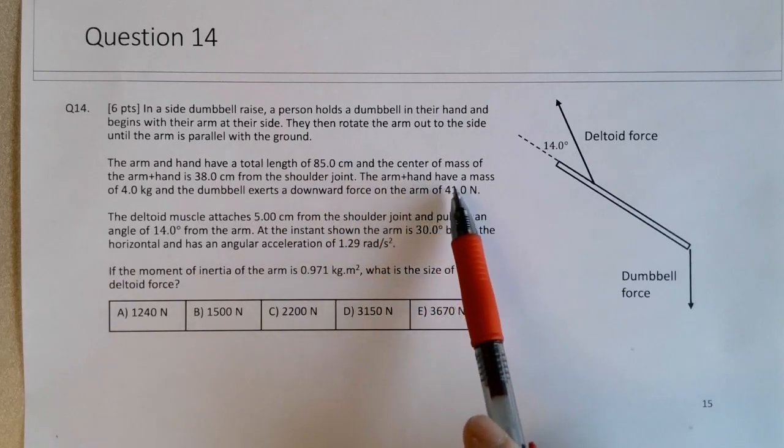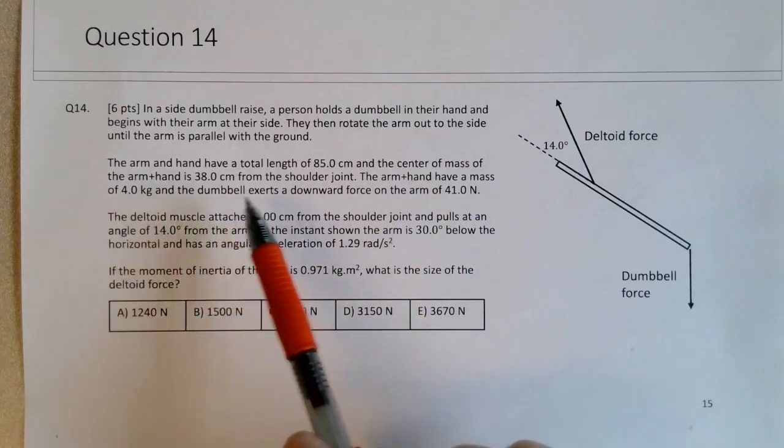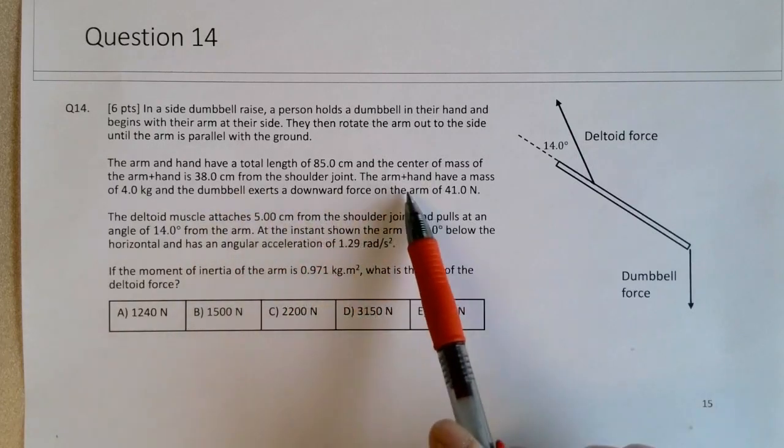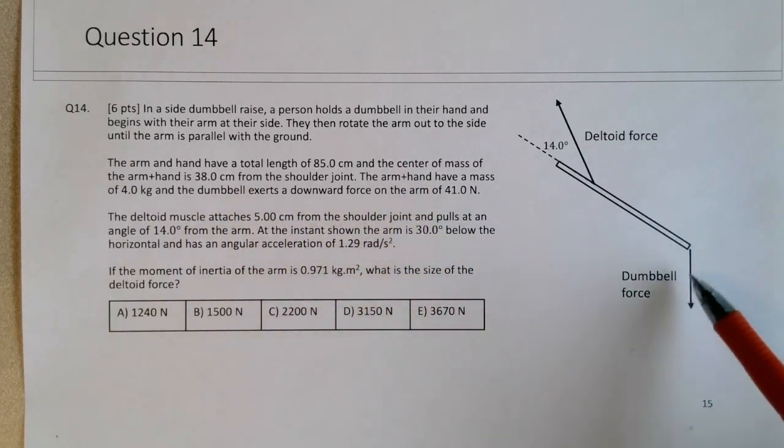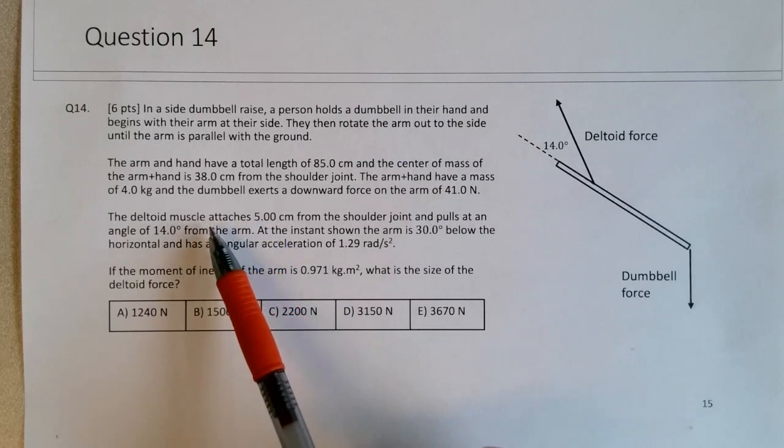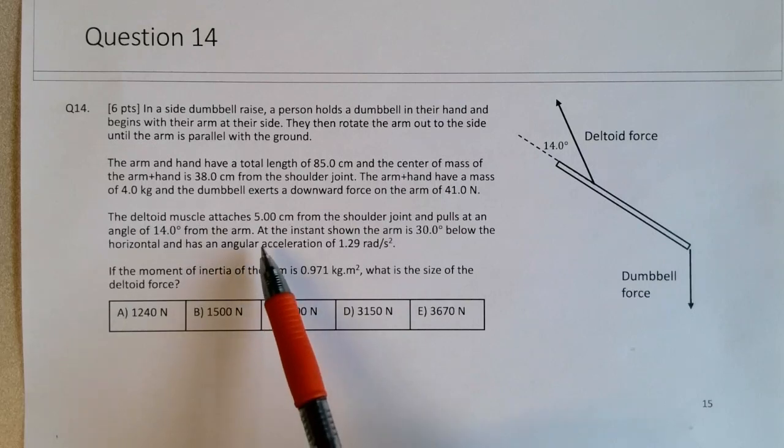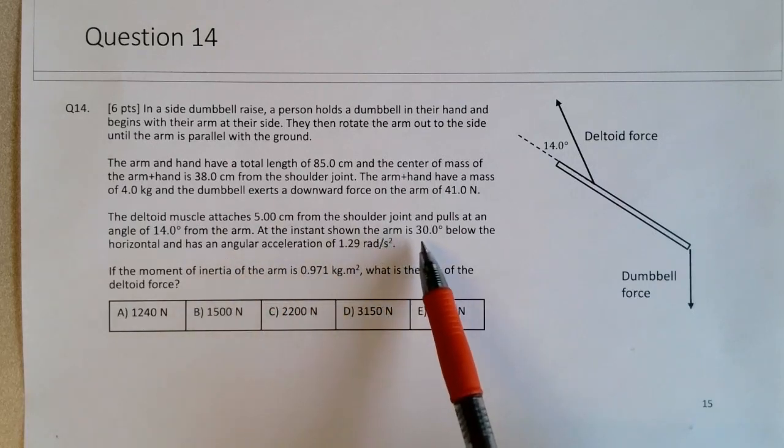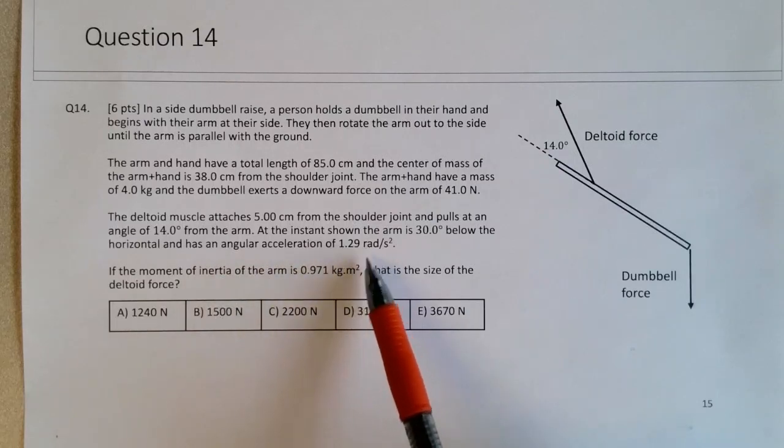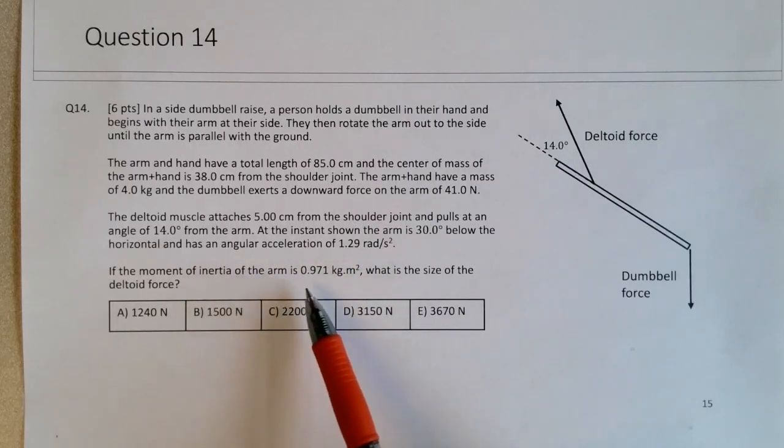The arm and hand have a mass of 4 kilograms, and the dumbbell exerts a downward force of 41 Newtons, a downward force at the end of the arm and hand. We're told that the deltoid muscle attaches 5 centimeters from the shoulder joint and pulls at an angle of 14 degrees from the arm. At the instance shown, the arm is 30 degrees below the horizontal and has an angular acceleration of positive 1.29. The moment of inertia of the arm is given, plus the size of the deltoid force.